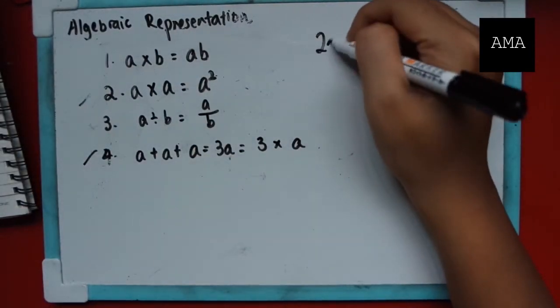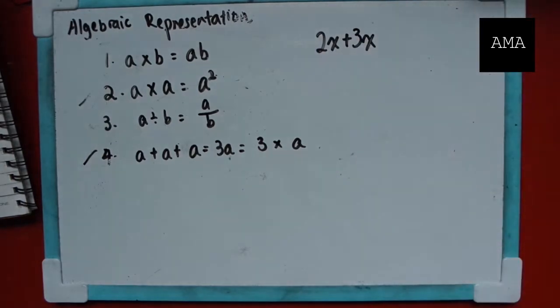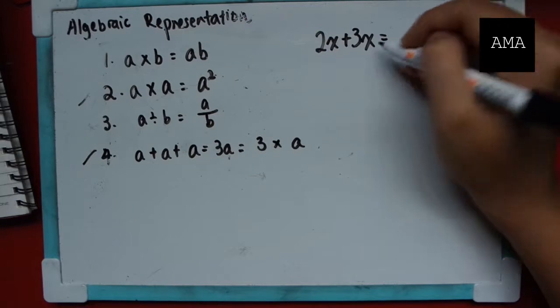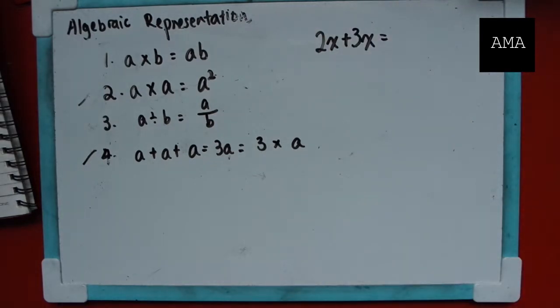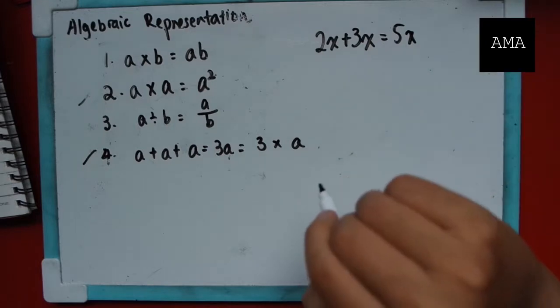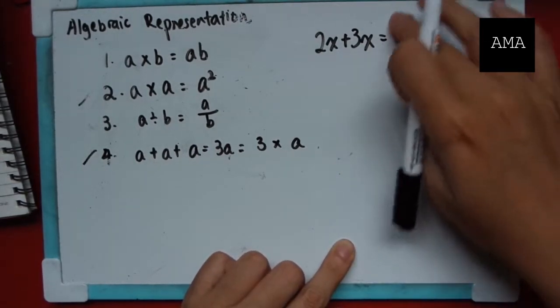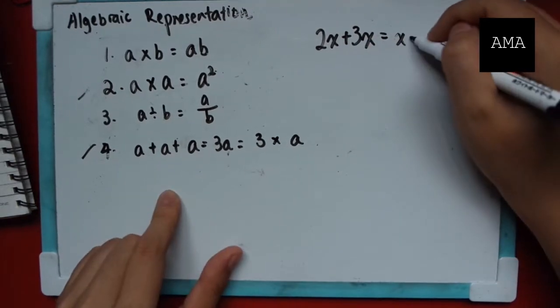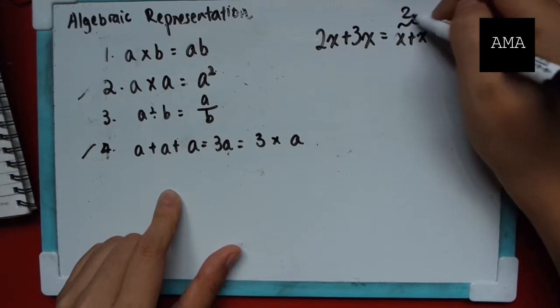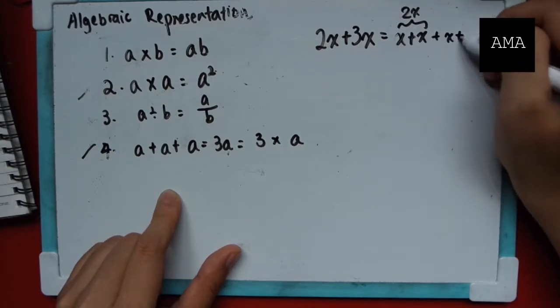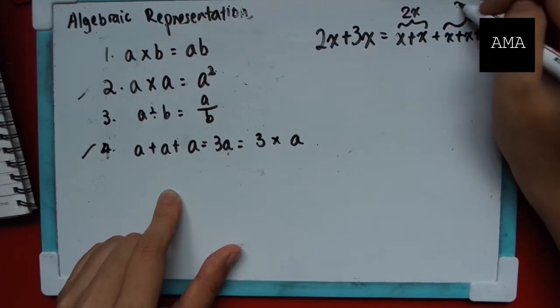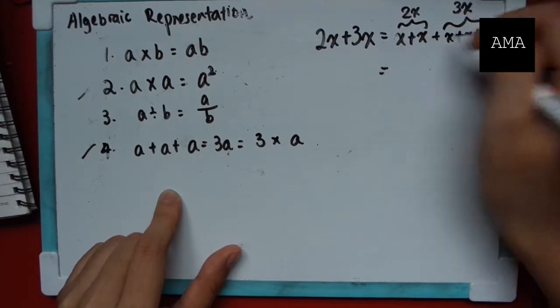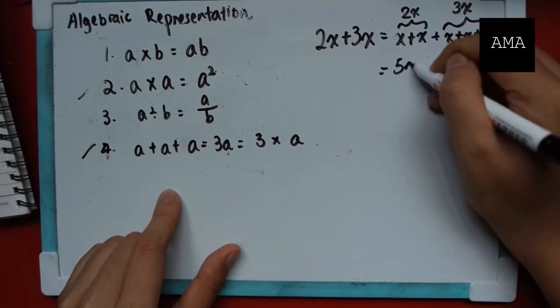For example, let's have 2x plus 3x. If I were to change this problem into objects instead of variables, for example, I say 2 apples plus 3 apples, should be very straightforward. 5 apples, right? But let me just show you another way. So 2x is understood as x plus x. This is 2x. Now 3x is x plus x plus x. Here is 3x. When you add them up, you get 1, 2, 3, 4, 5. 5x.